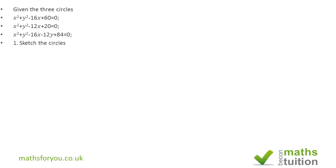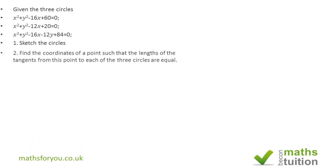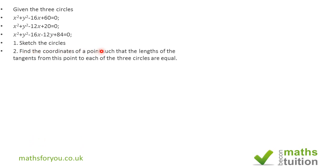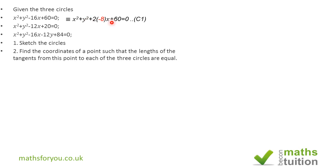The questions ask us to sketch the circles, then find the coordinates of a point such that the lengths of the tangents from that point to each of the three circles are equal. Instead of completing the square, I'm rewriting the general formula — for example, C1 becomes x² + y² + 2(−8)x + 60 = 0, because 2 times −8 gives −16x, so nothing has changed.